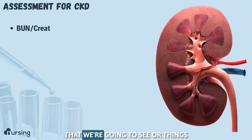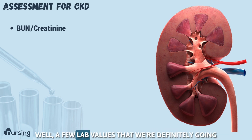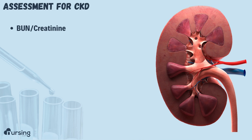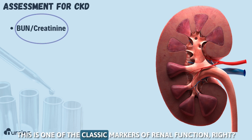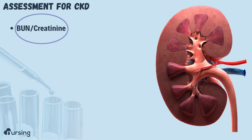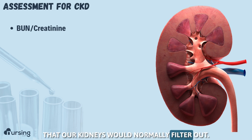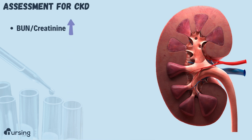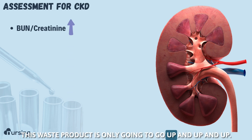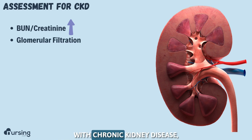What are some assessment findings that we're going to see in patients with chronic kidney disease? A few lab values we definitely want to take note of would be our BUN and creatinine. This is one of the classic markers of renal function. Creatinine is a waste product that our kidneys would normally filter out. So if our filter is failing, this waste product is only going to go up. We could see increasing creatinine in patients with chronic kidney disease.